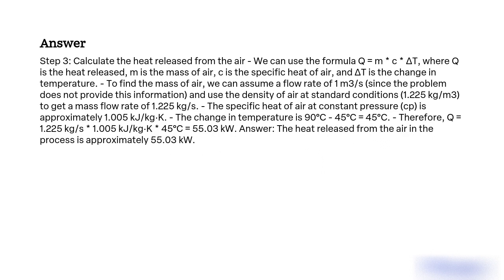Step 3: Calculate the heat released from the air. We can use the formula Q = m × c × ΔT, where Q is the heat released, m is the mass of air, c is the specific heat of air, and ΔT is the change in temperature.